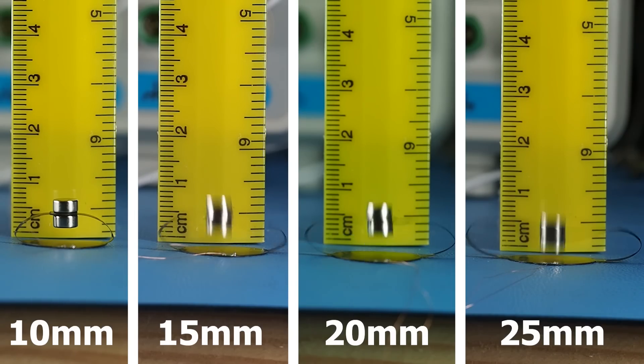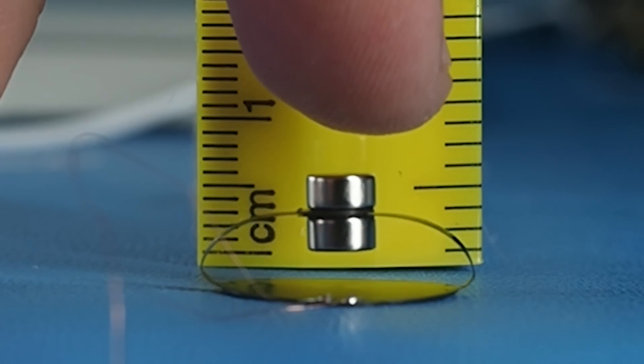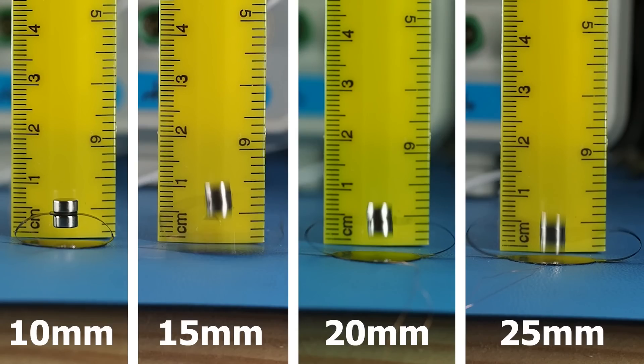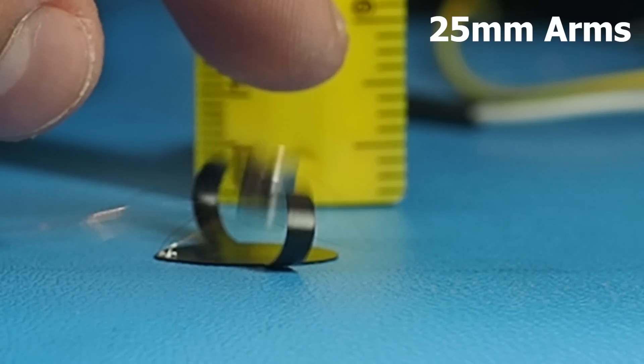Let's start with the length. I tested four different arm lengths. The 10 millimeter version didn't quite work as the coils couldn't attract the magnets at that length. But as the arms got longer, the PCB jumped higher. The best result was the 25 millimeter arm length which managed to jump a maximum of 25 millimeters.